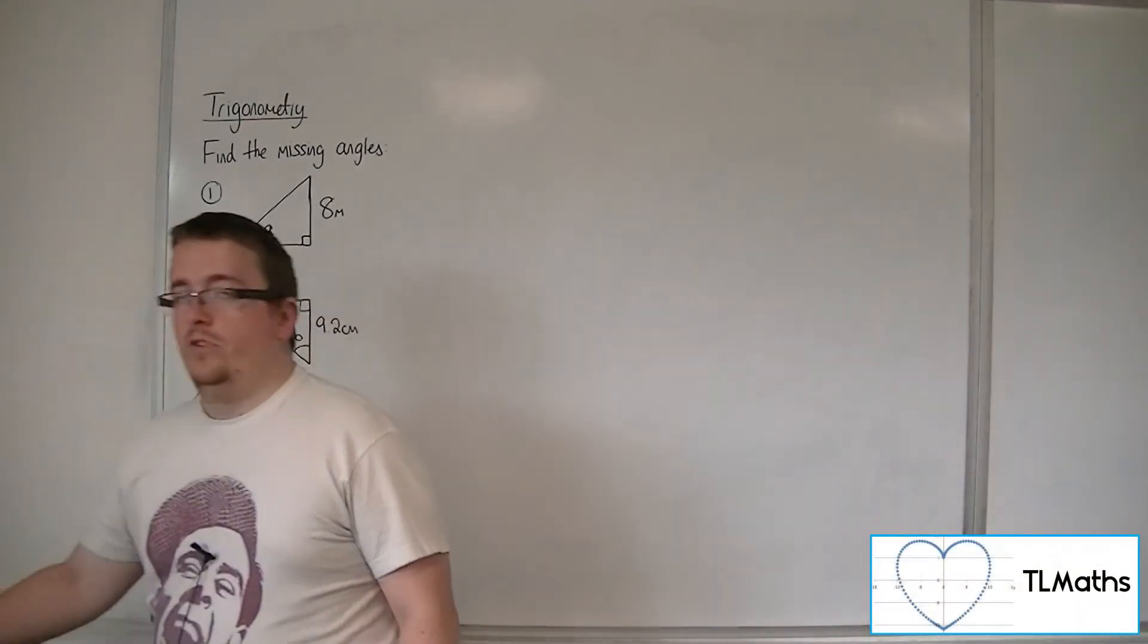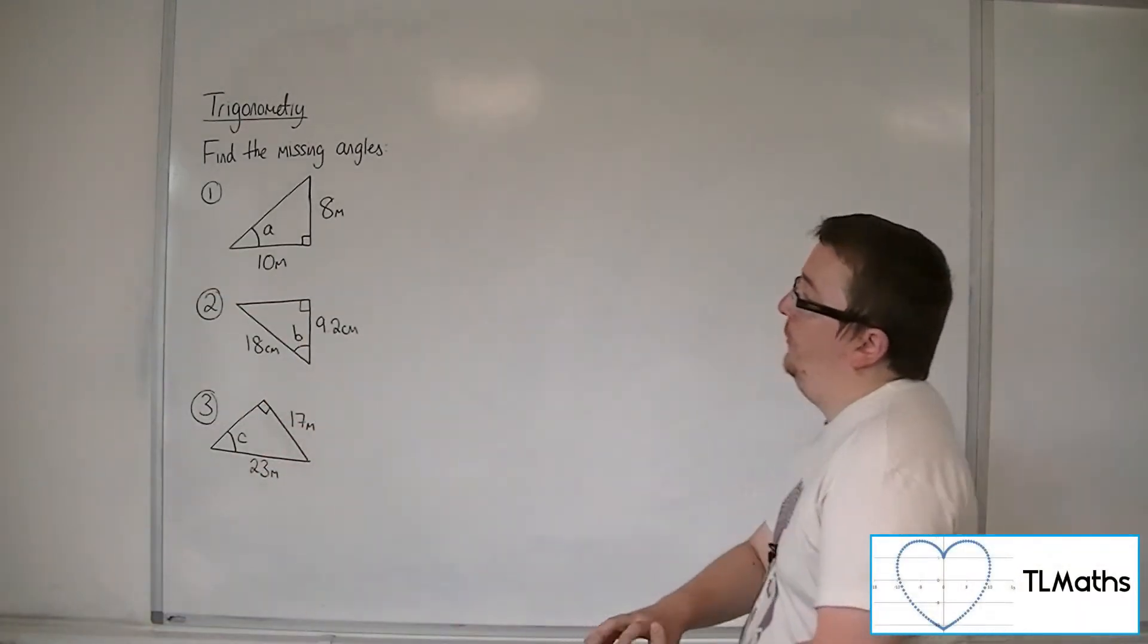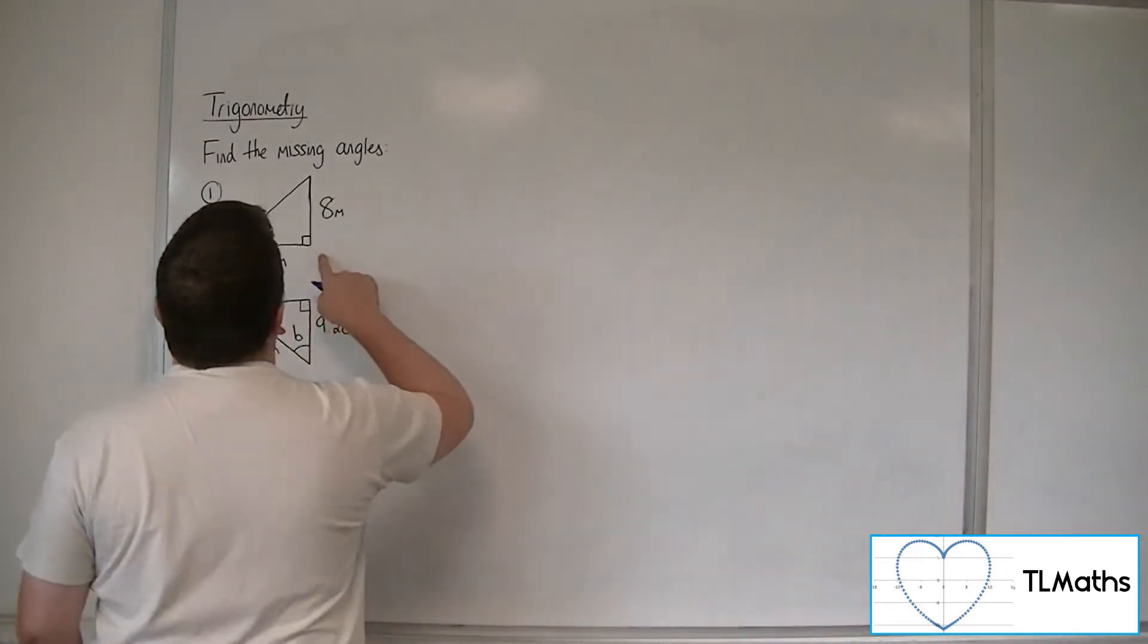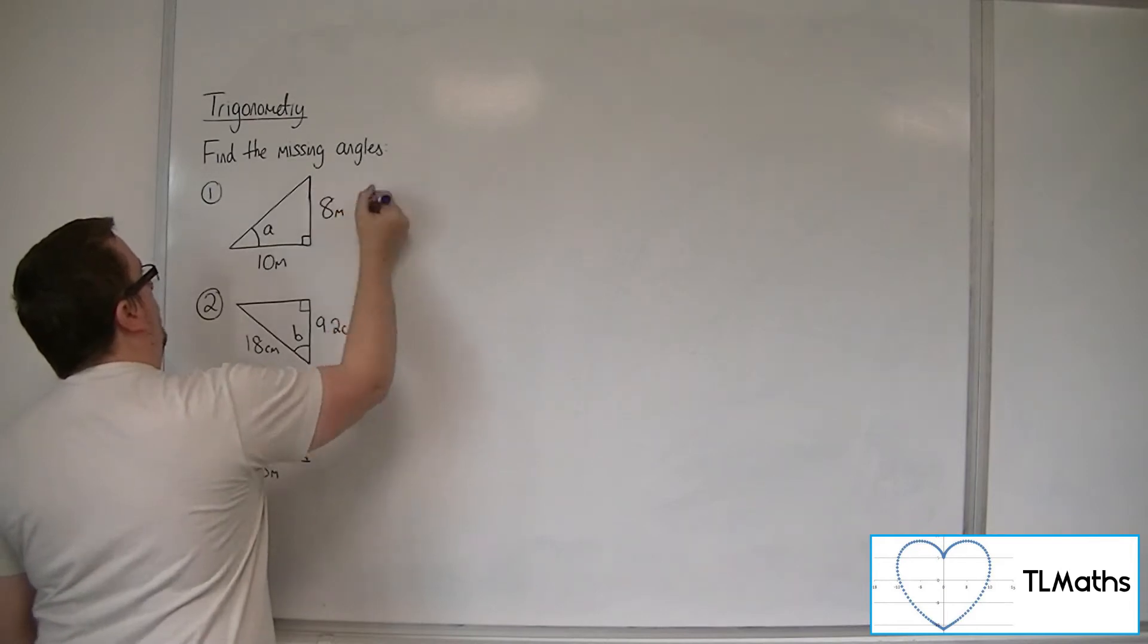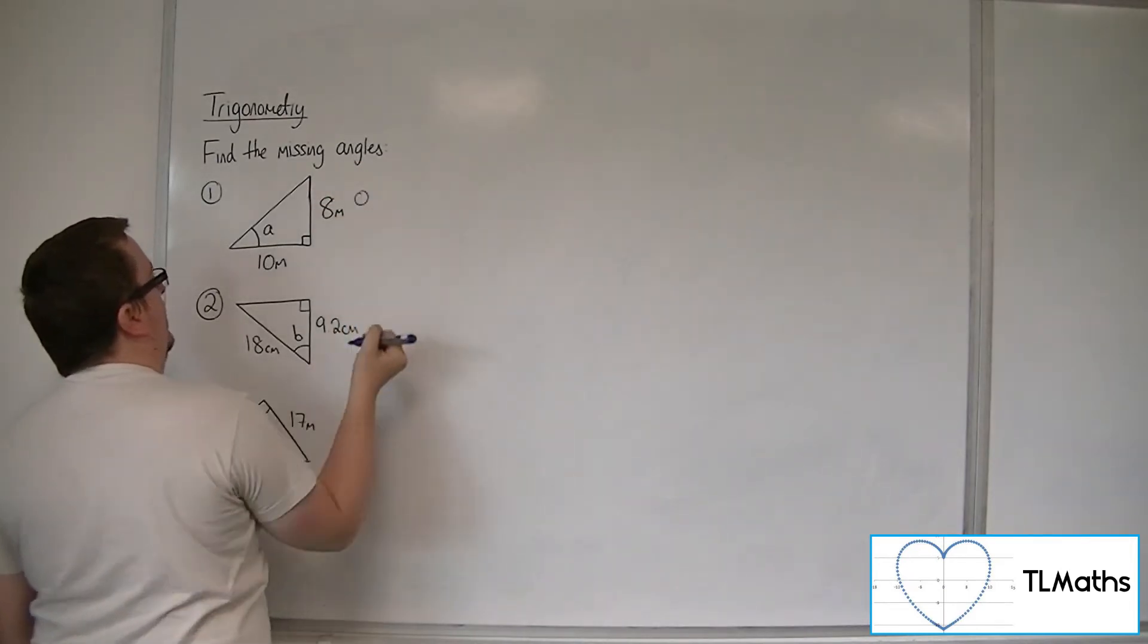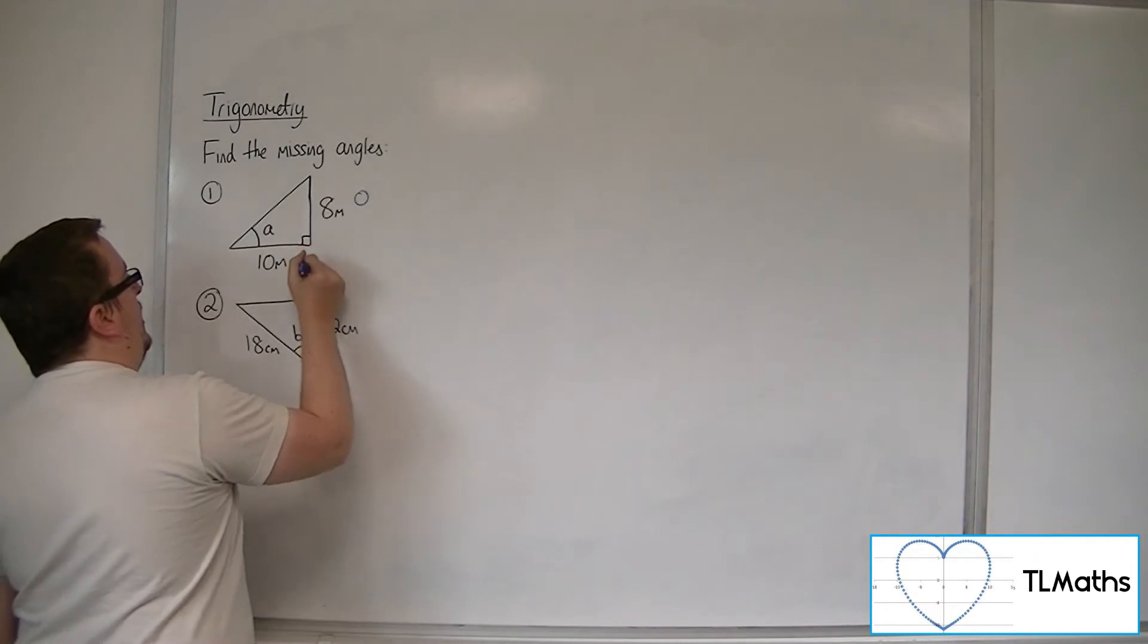So making sure your calculator's in degrees, what we're going to do is go for this first one and make sure we're labelling it correctly so we know that we've got the opposite side to the angle, and we've also got the adjacent.